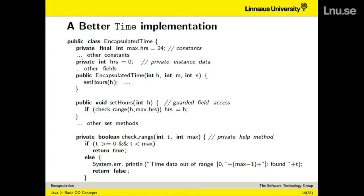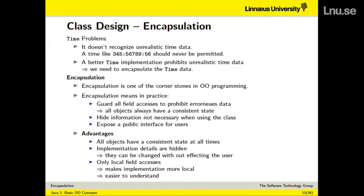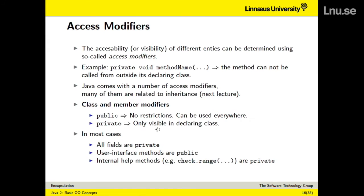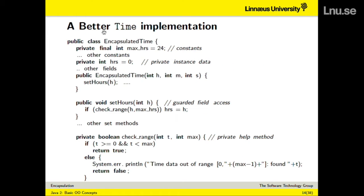The advantages are that all objects have a consistent state at all times — always realistic values in the fields. The hours should only be between 0 and 24. The minutes should have reasonable values. A student shouldn't have incorrect birthdays or be 350 years old. A better time implementation takes care of this. First of all, in order to prevent writing directly to the field, you should always make the fields private.